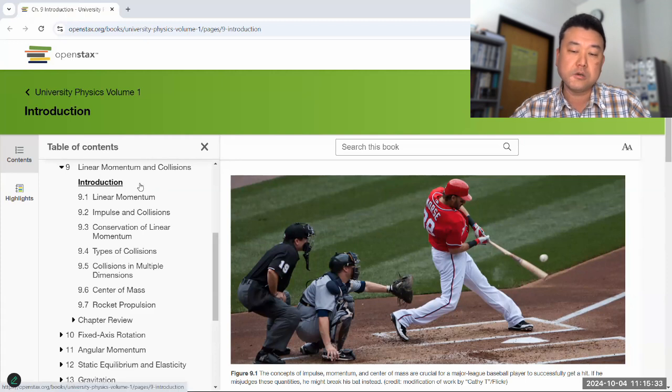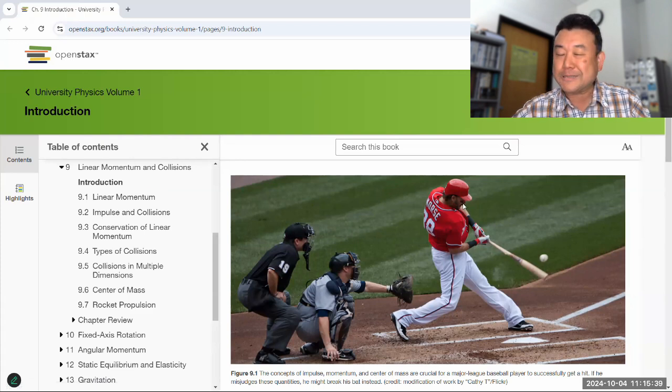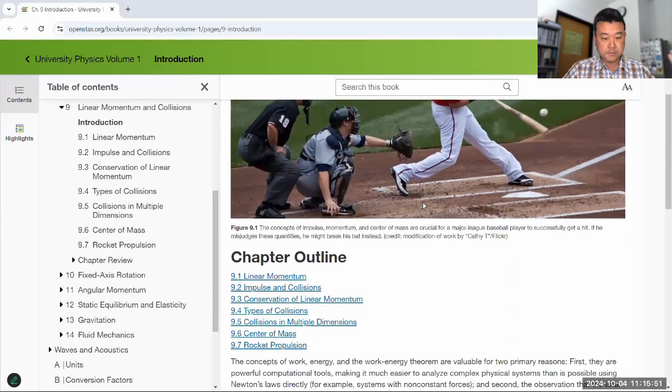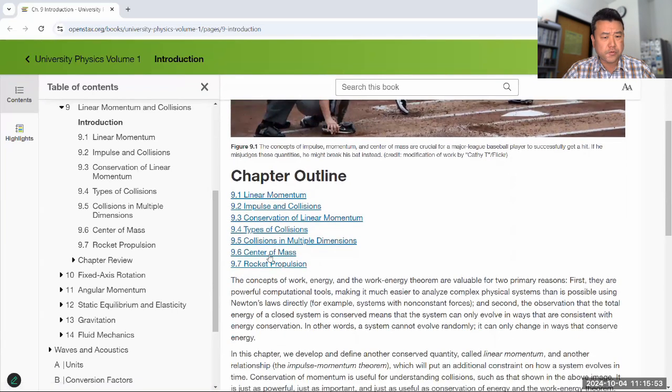It's one of the things that you will see over and over in your physics class. Even when you don't see it explicitly mentioned, it will be in the background always. This is one of the twin pillars of classical physics. So, seven sections, let me go through one by one.